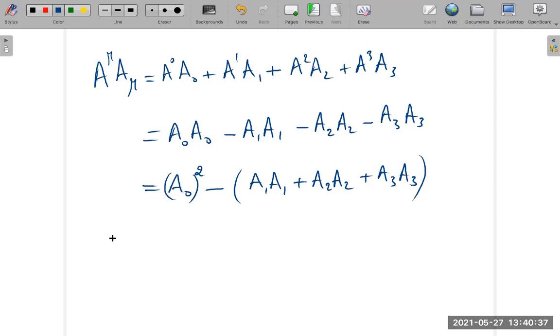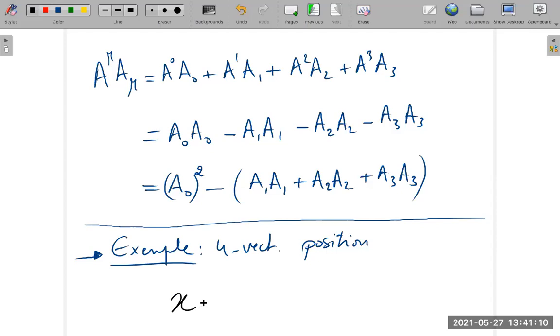We can take contravariant or covariant. Let me take an example with the position vector. For example, the four-vector position, which we call x_mu, has four components: x_0, x_1, x_2, and x_3. x_0 is the temporal component ct, x_1 is the spatial component x, x_2 is the spatial component y, and x_3 is the spatial component z.